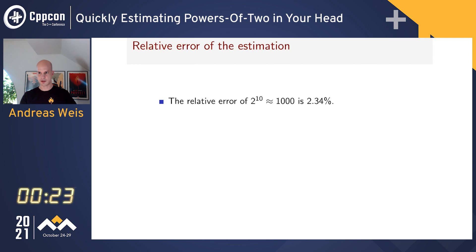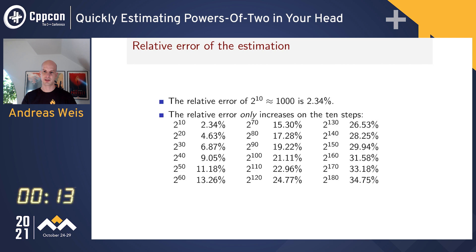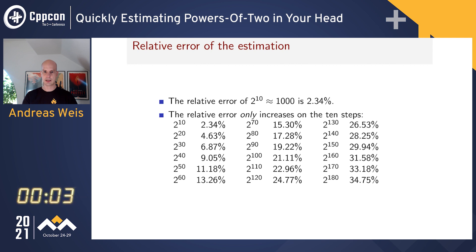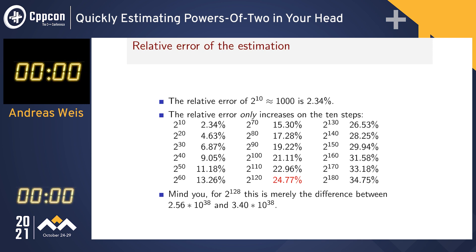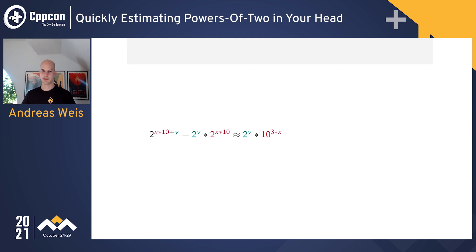Of course, this is not exact — we make a small error. The initial approximation that 1024 ≈ 1000 introduces an error of roughly two and a half percent. The error increases only on the tens steps, and for smaller exponents it grows almost linearly. For 2^128, this is merely the difference between 2.5 and 3.4 times 10^38, so the order of magnitude is still very accurate — making this a good technique for estimation. Here is the formula on one slide, and I hope this is a useful hack for you. Thank you very much.